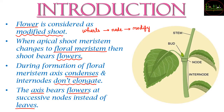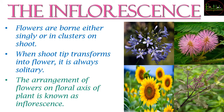Inflorescence has flowers that are either born singly or formed in clusters. When the shoot tip transforms into a single flower, that means it is going to be solitary — it is alone, a single flower, so it is called a solitary flower.